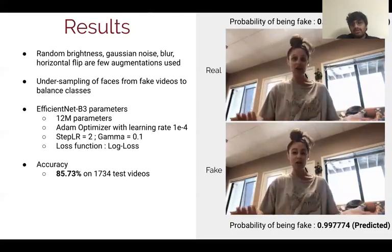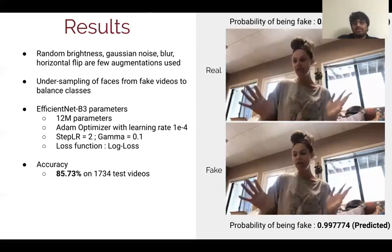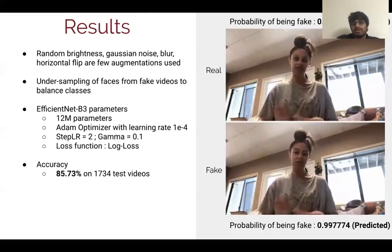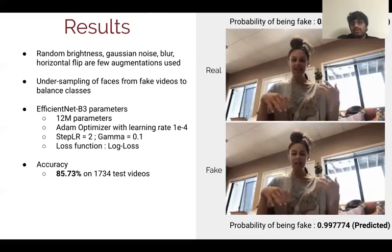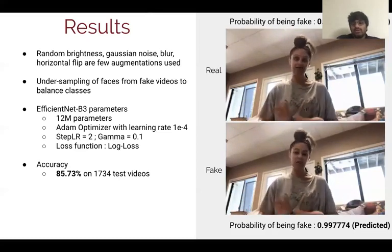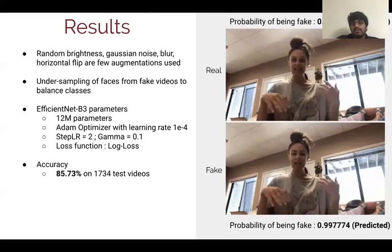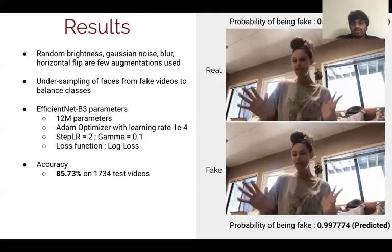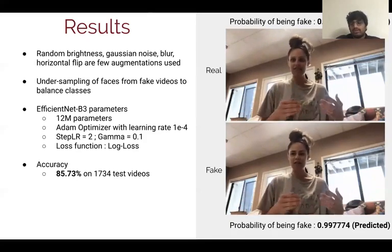On the right side, we can see two videos where the upper video is real and the bottom one is fake. The probability of the real video being fake is 0.4%, and the probability of the fake video being fake is 99.7%. That's the result of my model right now.